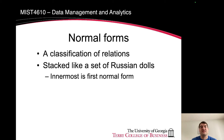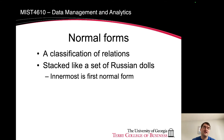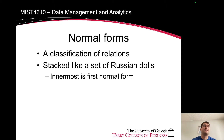The key distinguisher that makes something zero normal form is one of two things. The first is when you have a multi-valued attribute — something like a name where it's comprised of multiple parts: first name, middle name, last name. Or address, where it's comprised of multiple parts like street address one, street address two, city, state, zip. All of those are attributes that are not a single value.